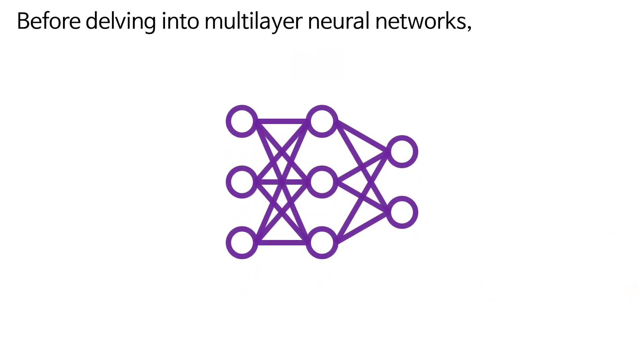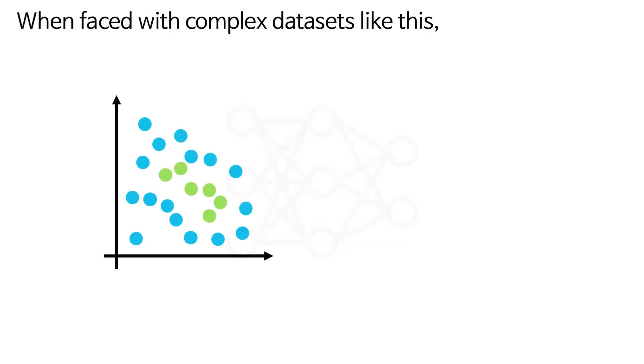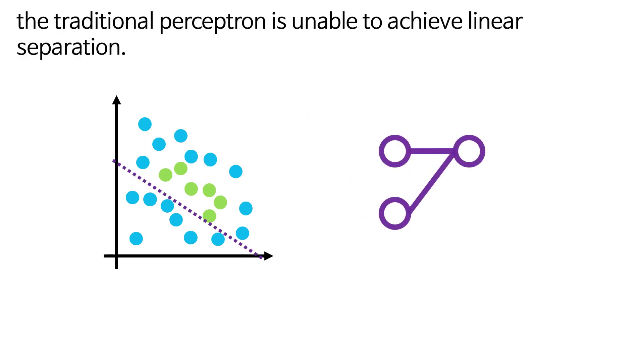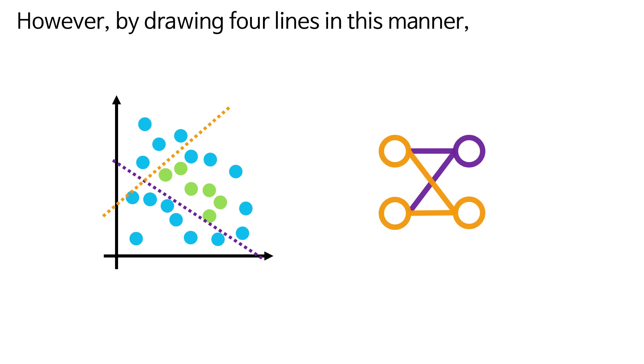Before delving into multilayer neural networks, it's essential to grasp them intuitively. When faced with complex datasets like this, the traditional Perceptron is unable to achieve linear separation. However, by drawing four lines in this manner, we can successfully separate this dataset.